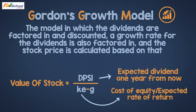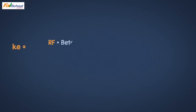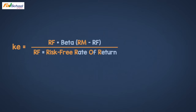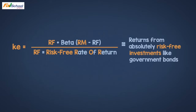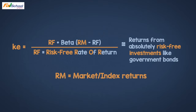We have explained the calculation of KE in detail in past episodes. Just to refresh: KE = RF + Beta × (RM - RF), where RF is the risk-free rate — the return given by government bonds to investors — and RM is the return given by the market or index.